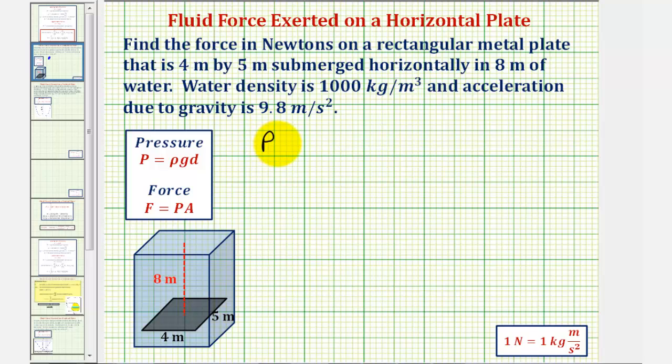So the pressure P is equal to the density of the water, which is 1,000 kilograms per meters cubed, times the acceleration due to gravity, which is 9.8 meters per second squared, times the depth or distance below the surface, which we're given as eight meters. So this product is 78,400, and the units would be newtons per meters squared.